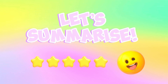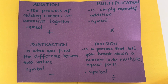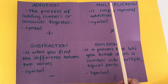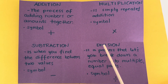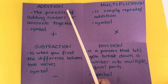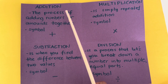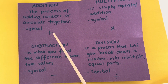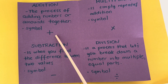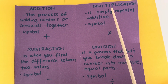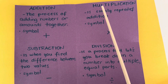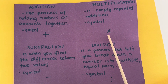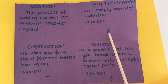Now, join me and let's summarize. Let's differentiate addition, multiplication, subtraction, and division. In addition, it is the process of adding numbers or amounts together, and the symbol is the plus sign. In multiplication, it is just simply repeated addition, and here is the mathematical symbol for multiplication.